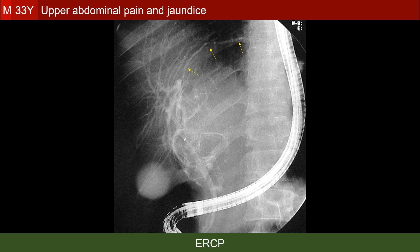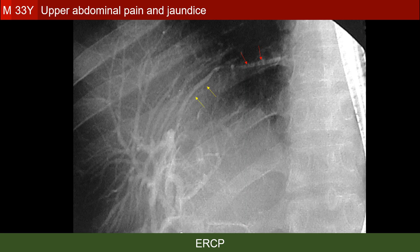The second important observation is the focal dilatation of one bile duct very close to the cyst, which contains also tiny filling defects. This is a magnified view showing the dilated duct in the vicinity of the cyst and the small filling defects within its lumen.